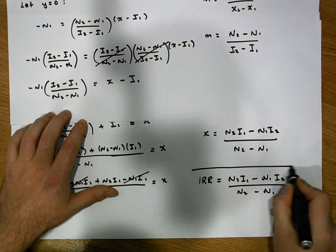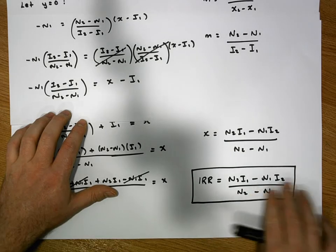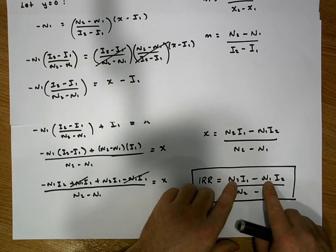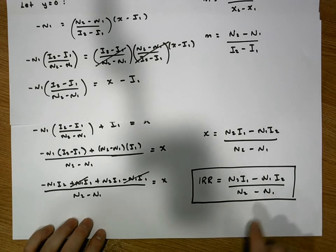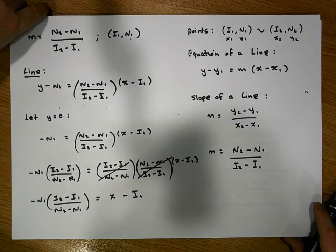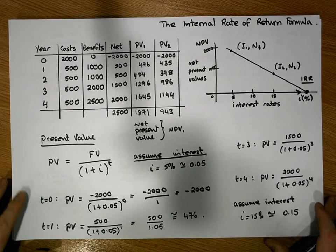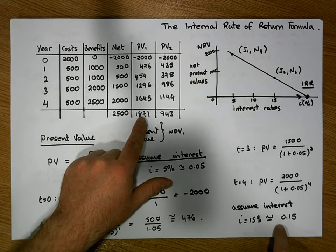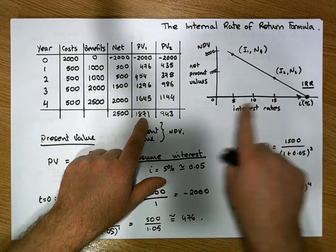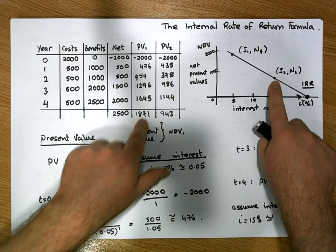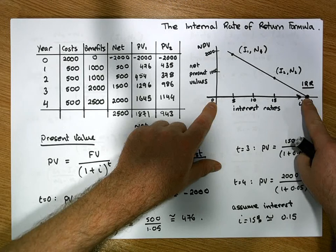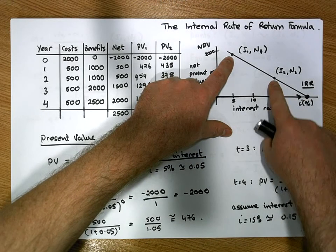This is the formula we use to calculate the internal rate of return. All we need are two interest rates, i1 and i2, and their associated net present values, n1 and n2. We started with an example, plotted the two NPV points on a graph with interest rates on the horizontal axis and NPV on the vertical axis, and identified the IRR as where the line crosses the x-axis.